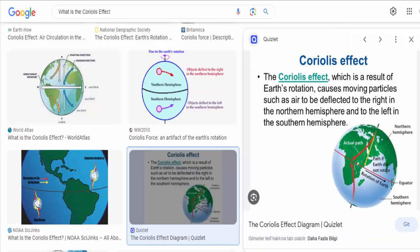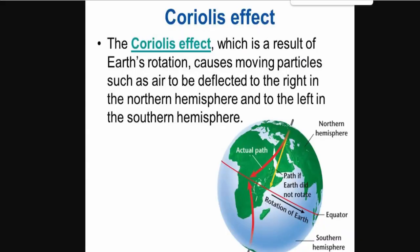When an object or fluid moves in a straight line relative to the Earth's surface, such as an airplane, ocean current, or wind, it appears to be deflected due to the difference in rotational speed at different latitudes.